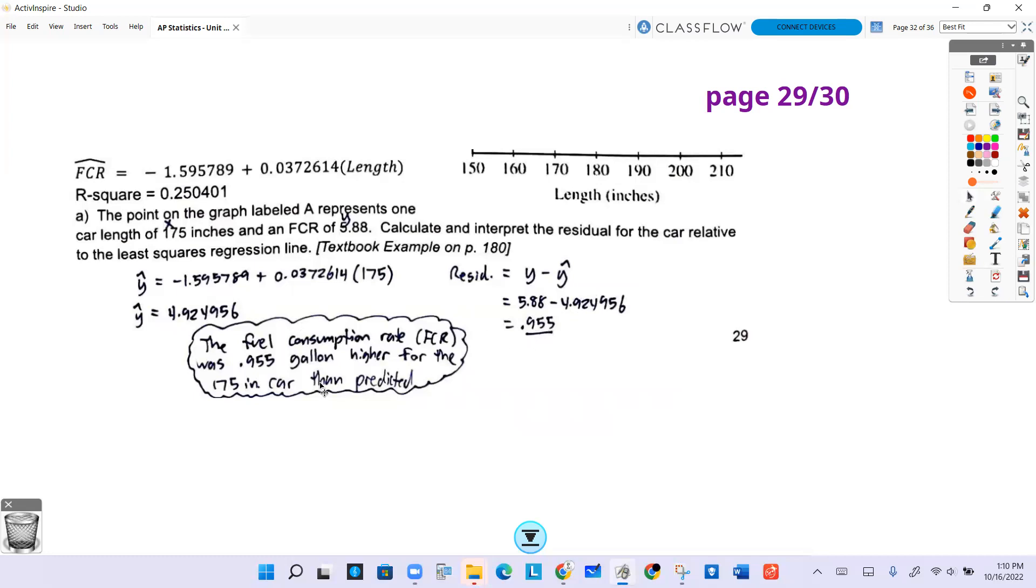The interpretation is that the fuel consumption rate FCR was 0.955 gallons higher for the 175 inch car than predicted by the model.